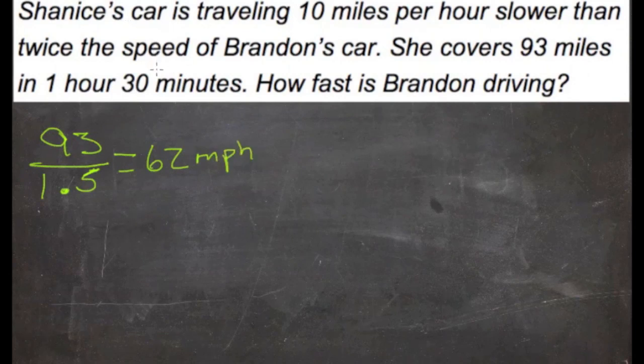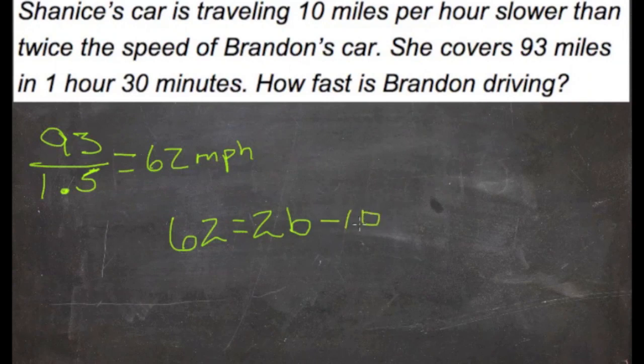Now that's Shanice's speed. It says that she's traveling 10 miles an hour slower than twice the speed of Brandon. So her speed is equal to twice Brandon's speed minus 10 miles an hour. We're trying to set them equal, so we say his speed doubled, take away 10 miles an hour, is the same as her speed.